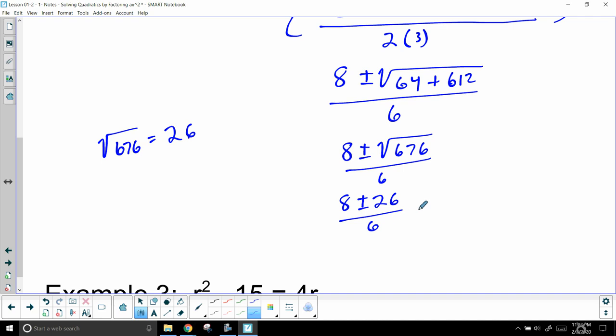From here I'm going to split it to 8 plus 26 over 6 and 8 minus 26 over 6. So 8 plus 26 equals 34 over 6, 8 minus 26 is negative 18 over 6.